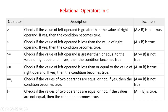Then the next operator is equal to equal to (==), which checks if the values of two operands are equal or not. If yes, the condition becomes true. The next operator is not equal to (!=), which checks if the values of two operands are equal or not — if they are not equal, then the condition becomes true.